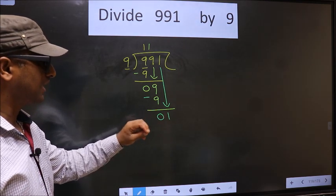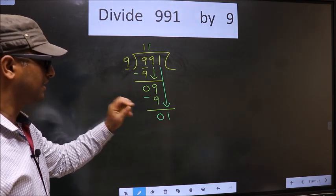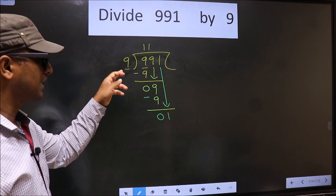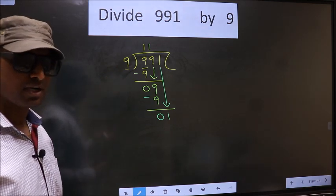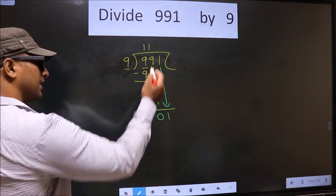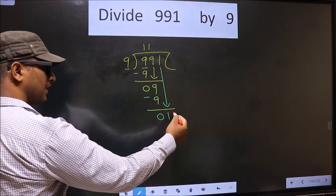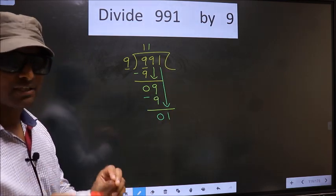Here we have 1. Here 9. 1 is smaller than 9. So what many do is they put a dot and take 0 here. Which is wrong.